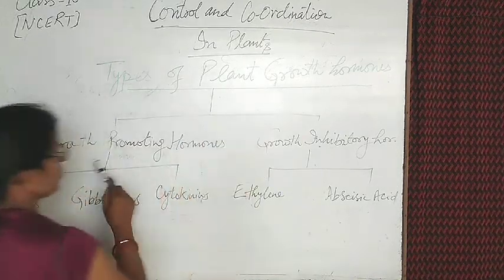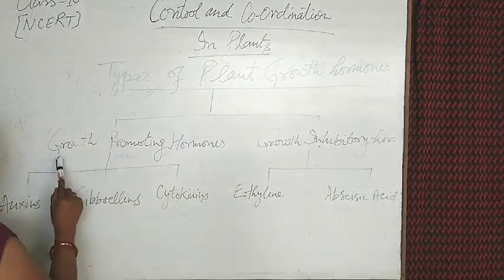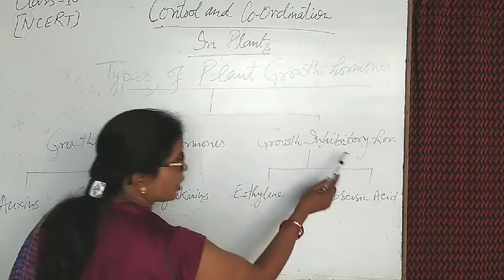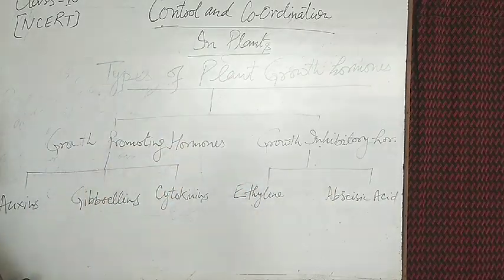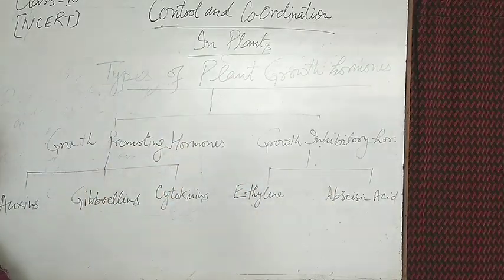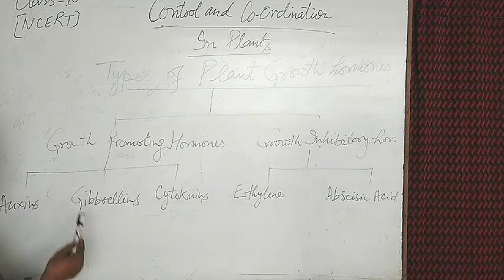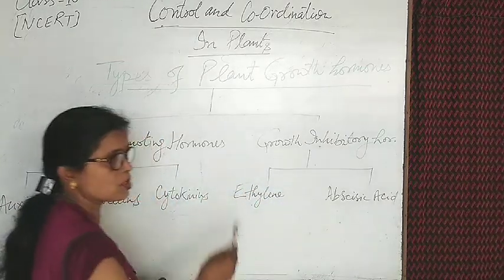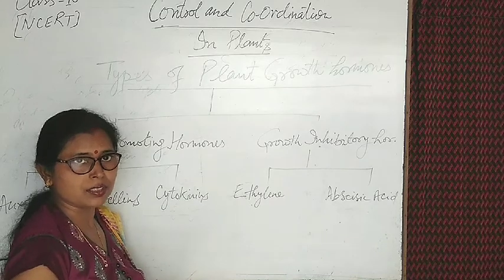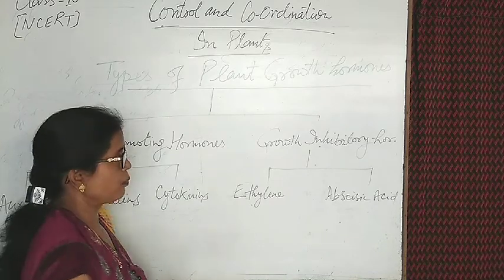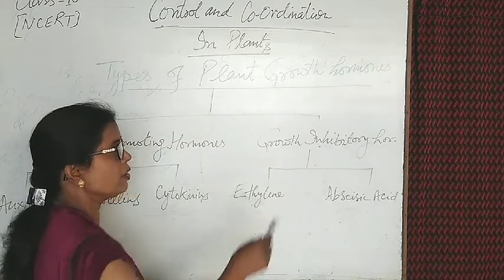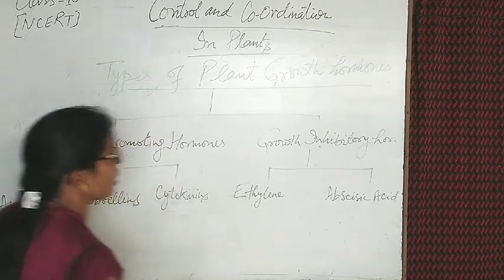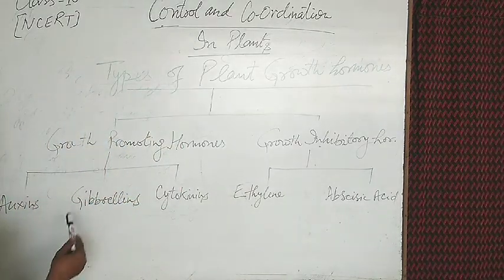Plant growth hormones are of two types: first, the growth-promoting hormones, and second, growth-inhibitory hormones. Growth-promoting hormones means the increase in the plant body, and the growth-inhibitory hormones are produced under different types of stress inside the plant body, which inhibit or check the growth.